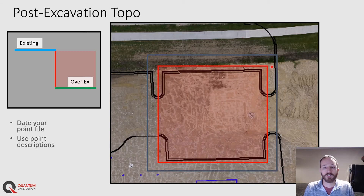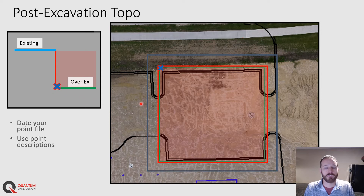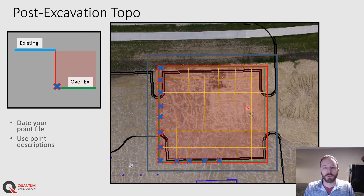Now we've done the excavation — you can see the excavated area outlined here in red — and we'll take a look at what we need to do to properly topo this and make sure we have the data we need. We'll start with a new point file and put today's date on it so you know it's the post-excavation topo and it doesn't get confused with other work on the site. We'll start here in the bottom of the over-excavation and take our first point on the corner. We'll continue around the bottom of the excavation taking topo points as we go. If the bottom of the excavation is laser level flat, you probably won't need quite as many points, but make sure you capture enough to get any ups and downs in the bottom.